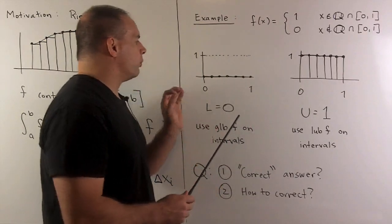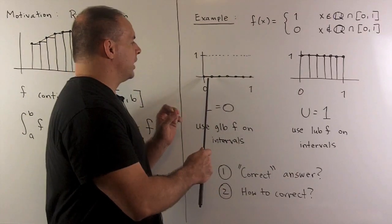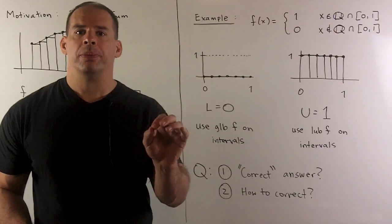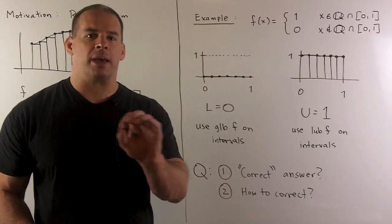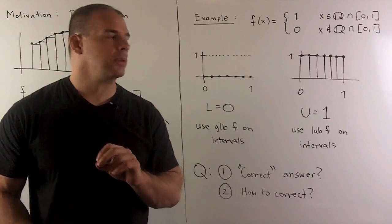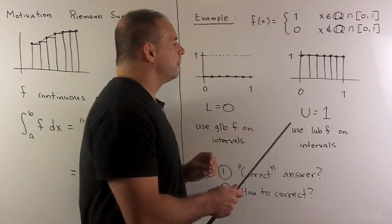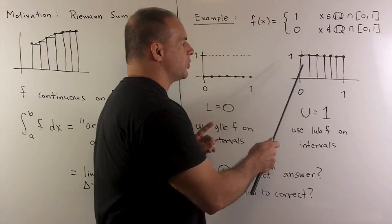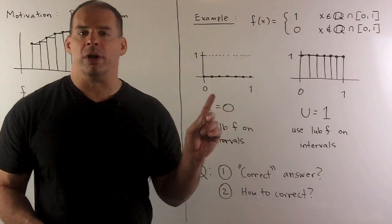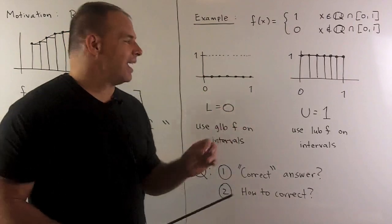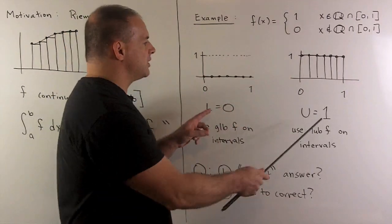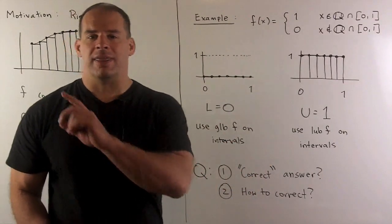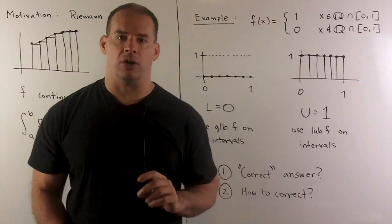If we want to form Riemann sums and always use an irrational point to determine the height, the heights are always zero. So instead of rectangles we have segments, and our Riemann sum equals zero. On the other hand, if we always use a rational point to determine the height, we always get height one, so the Riemann sum equals one. Taking limits, zero is not equal to one, so the limit doesn't exist — meaning this function is not Riemann integrable.